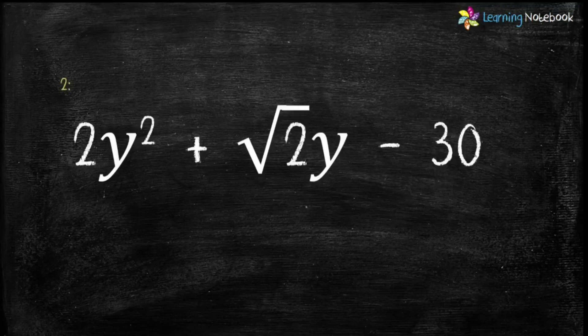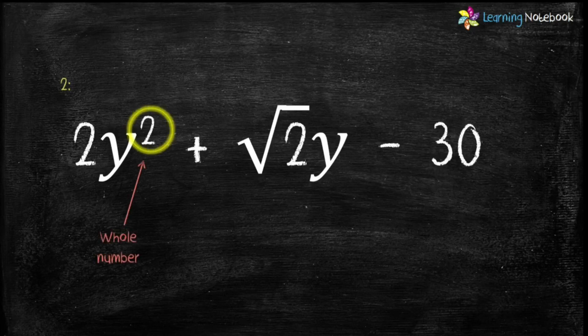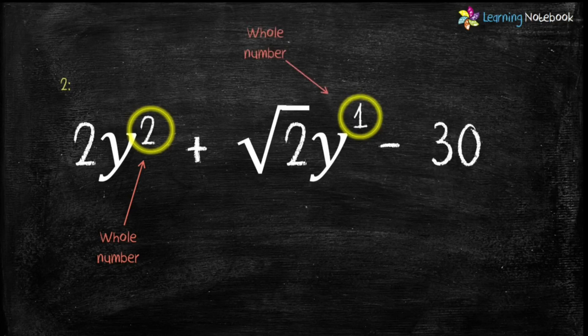The second expression is 2y square plus root 2y minus 30. The variable is y. In the first term, 2y square, power of y is 2 — a whole number. In the second term, root 2y, power of y is 1 — a whole number. The third term, 30, is a constant. Therefore, this is a polynomial.